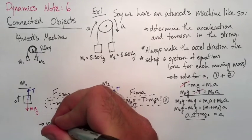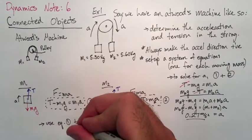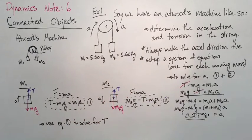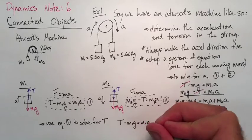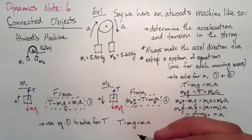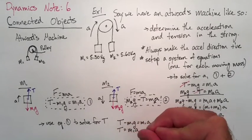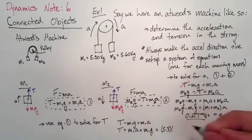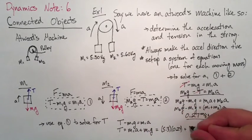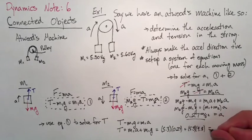Now we can choose equation one or equation two to solve for tension. Here we'll choose equation one. So we'll write out equation one again knowing what our acceleration is. Rearrange for tension, insert our numbers, and then we should find that tension is 53.4 Newtons.